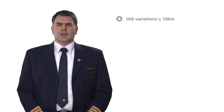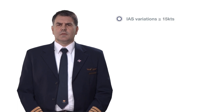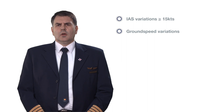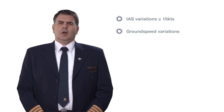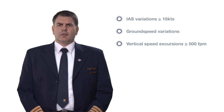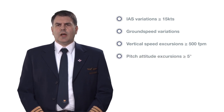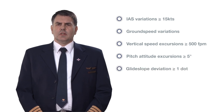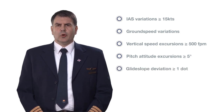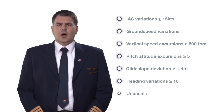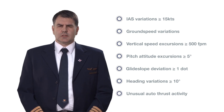Some of the precursors of wind shear are: indicated airspeed variations in excess of 15 knots; ground speed variations; a decreasing headwind or an increasing tailwind, or a shift from a headwind to a tailwind; vertical speed excursions of 500 feet per minute or more; pitch attitude excursions of 5 degrees or more; glide slope deviation of 1 dot or more; heading variations of 10 degrees or more; and unusual autothrust activity or thrust lever position.